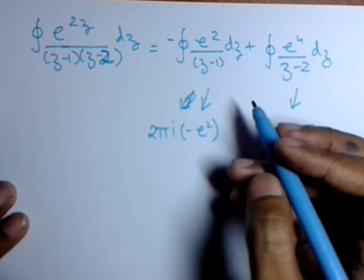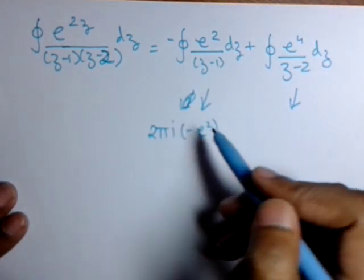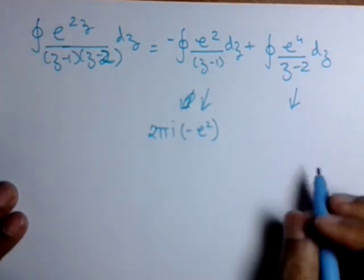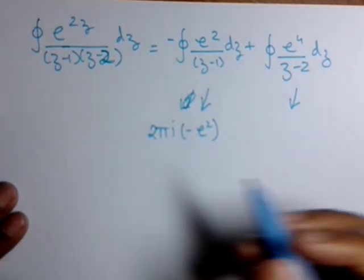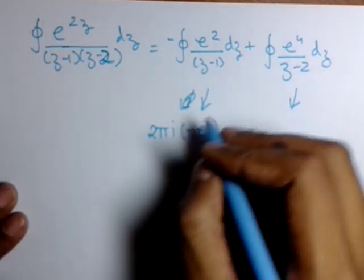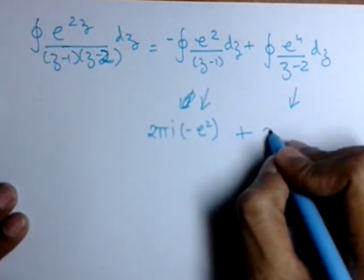This is a constant function, so we can't put here z equal to z0 since there is no value of z accepted in the function. You can see the value of the function is constant irrespective of the value of z0. So this is the answer of the first part: 2πi times minus e squared.